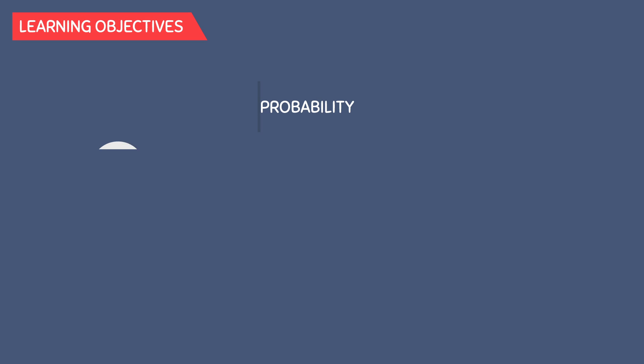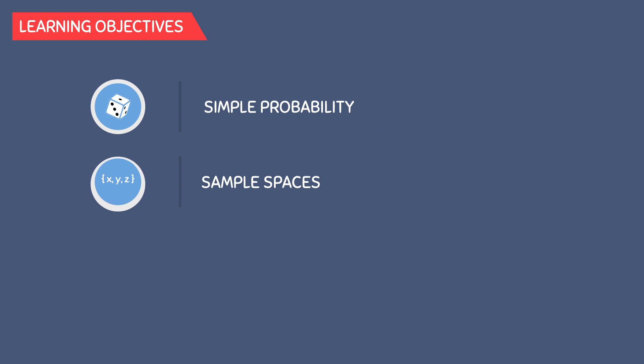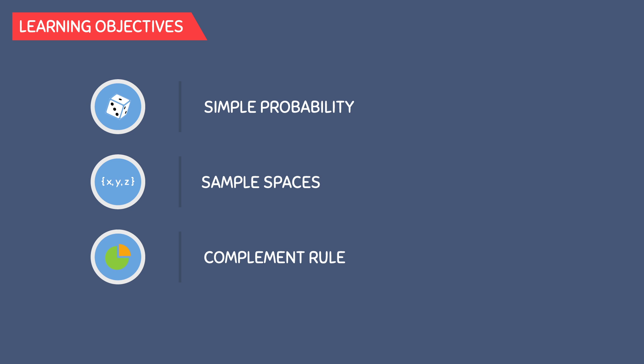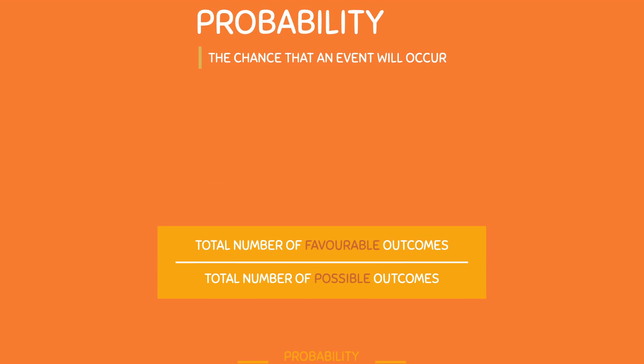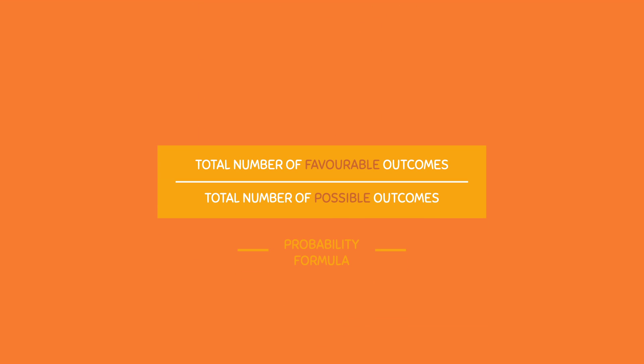In this video, we'll be learning about simple probability, sample spaces, and the complement rule. Probability can be defined as the chance that an event will occur. This is equal to the total number of favorable outcomes divided by the total number of possible outcomes.